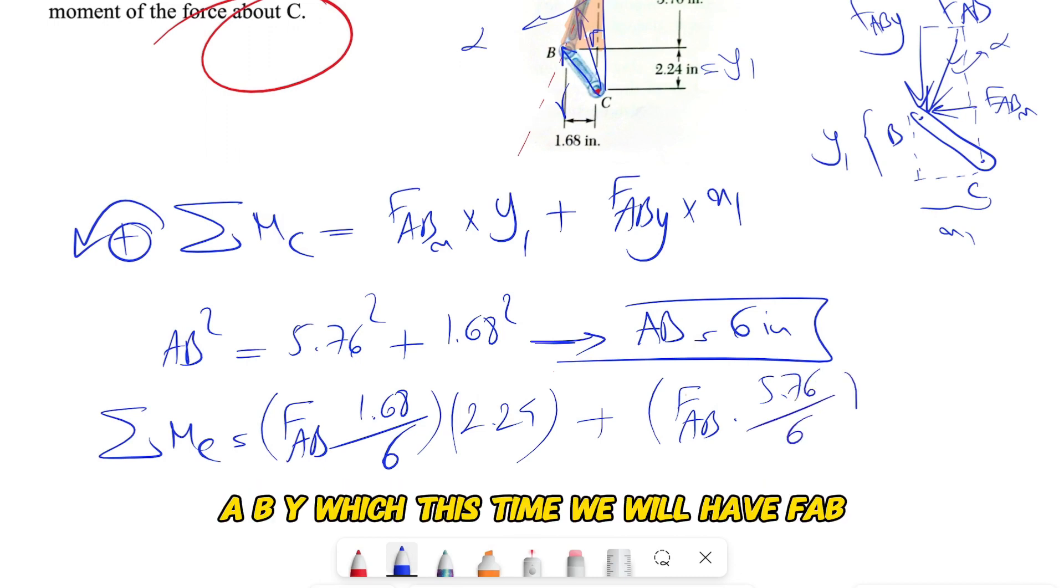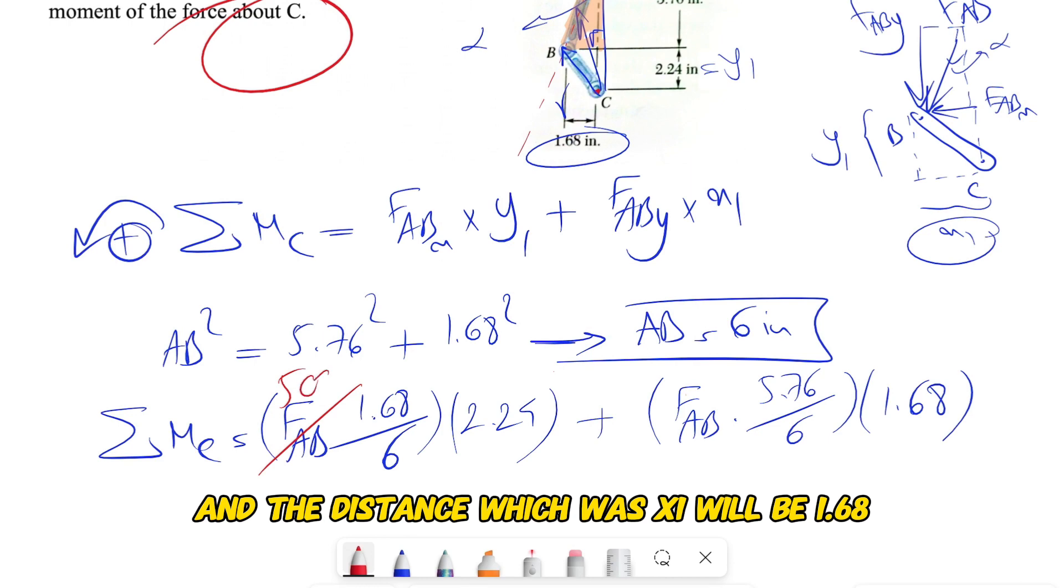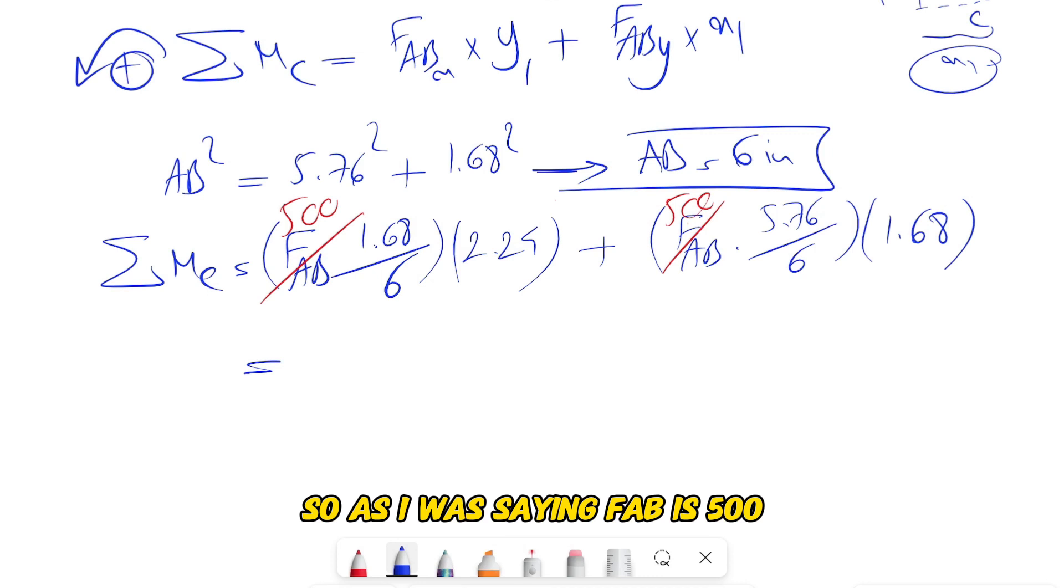And it will be 5.76 over 6, and the distance which was x1 will be 1.68. So as I was saying, FAB is 500.